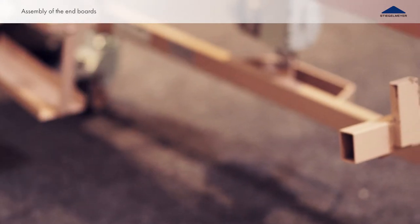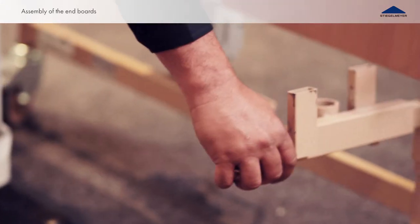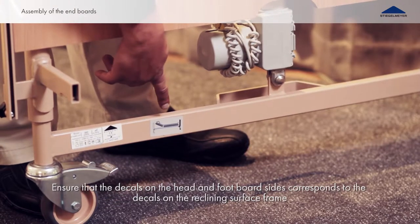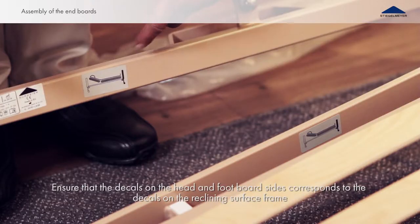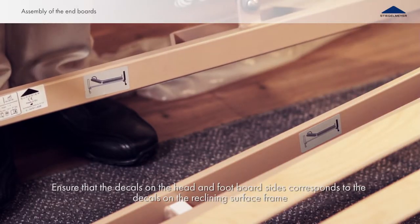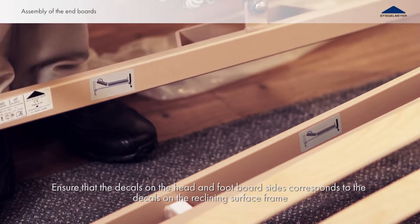Remove the two transport aids from the footboard. Check decals on the frames of the head and foot boards to match them up with the corresponding decals at the head and foot sides on the reclining surface frame.